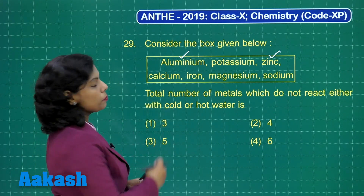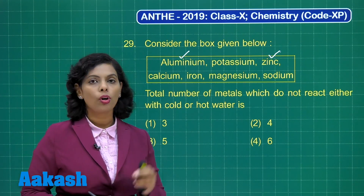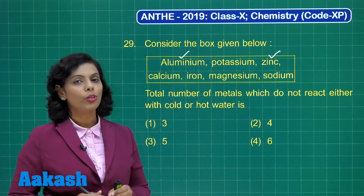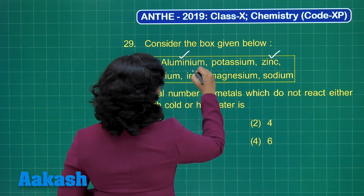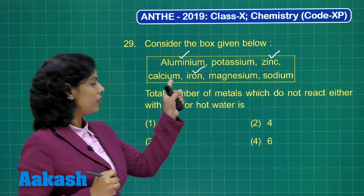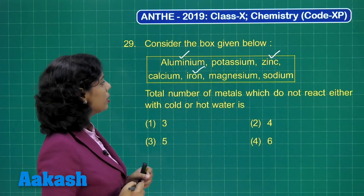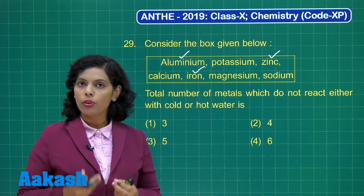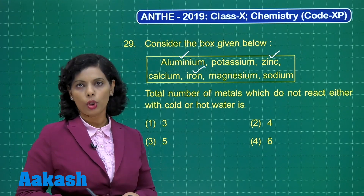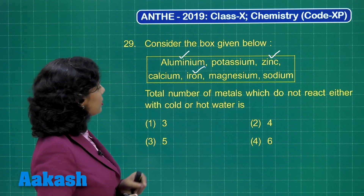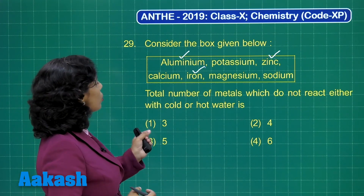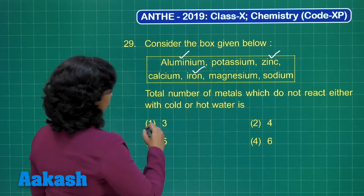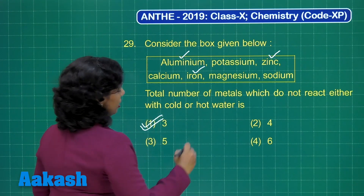Calcium is also a reactive metal — it can even react with cold water. Iron does not react with hot or cold water but reacts with steam to form hydrogen gas, so iron also gets a tick. Magnesium reacts with hot water, and sodium is more reactive and reacts with cold water. On that basis, the total number of metals which do not react with either cold or hot water is 3 — choose option 1 as the correct answer.